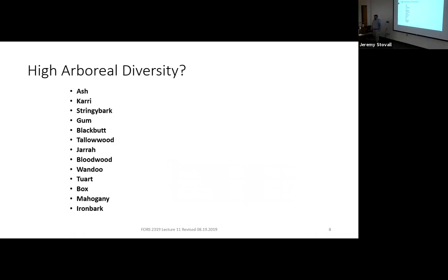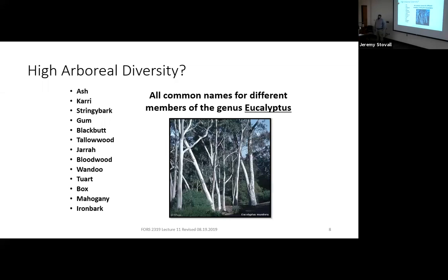Starting with the most common group: here are a bunch of different common names — ash, gum, blackbutt, wandoo, box, ironbark. That sounds like a whole bunch of different tree species, and it is, but these are all in the eucalyptus genus. The English common names are very confusing because European colonists arrived and started calling things by names of trees they recognized, or describing them based on bark or other features, even though they're all eucalyptus.